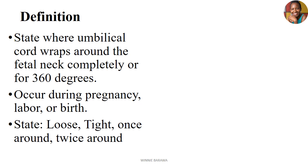Let's start by defining what a knuckle cord is. We all appreciate that the umbilical cord is the communication channel between the mother and the child in terms of supply of nutrients, supply of oxygen, and also supply of protection components such as antibodies. However, the umbilical cord is supposed to be free from entanglement with the child, but there are moments whereby the umbilical cord wraps around the neck of the fetus, either completely or covering a 360 degree.